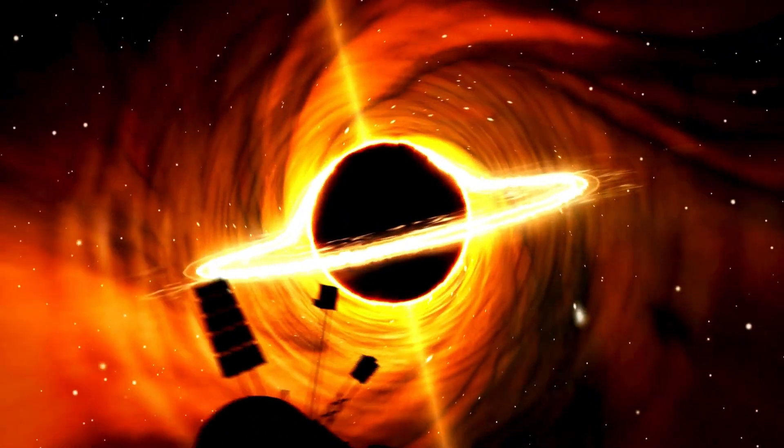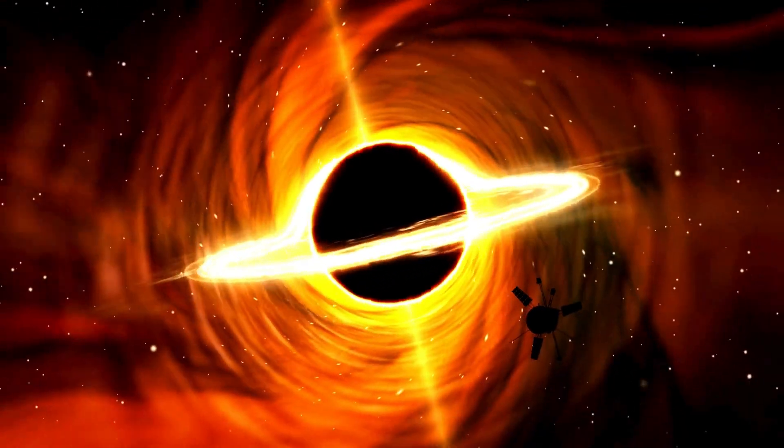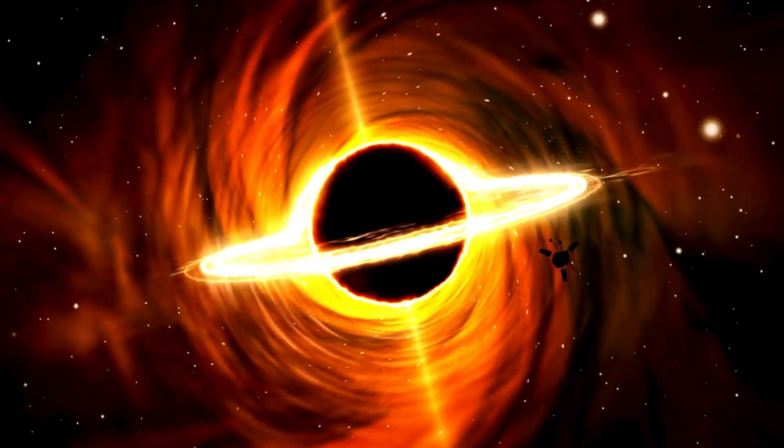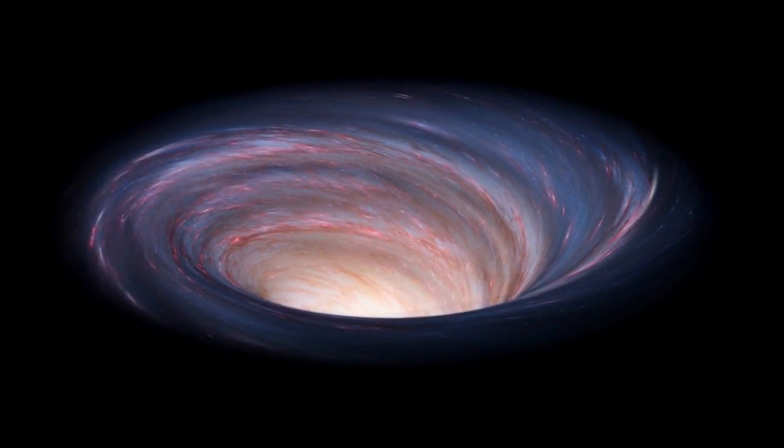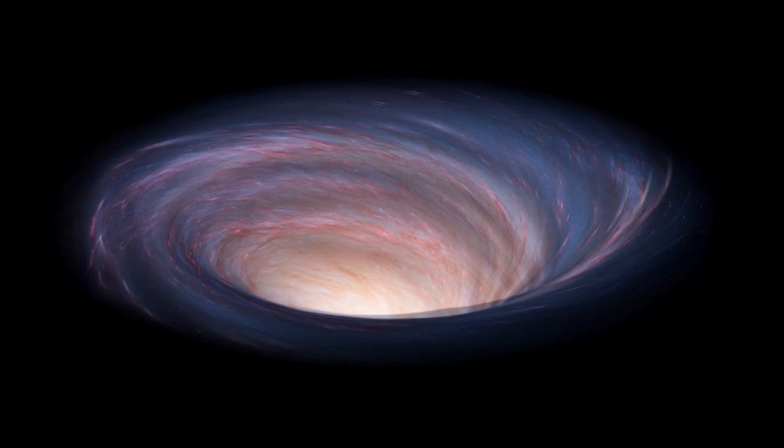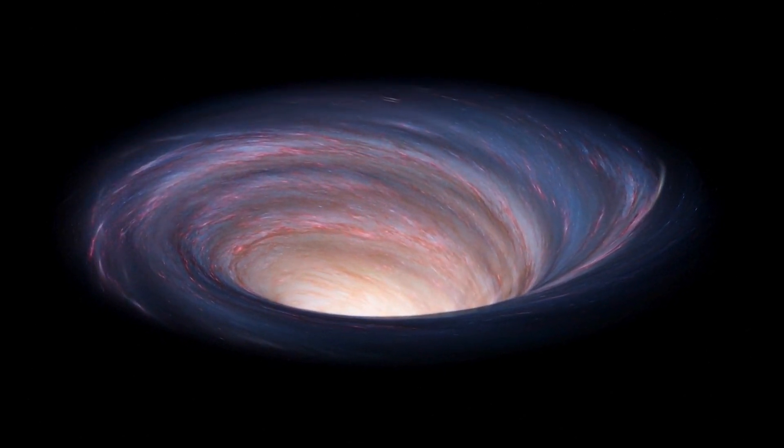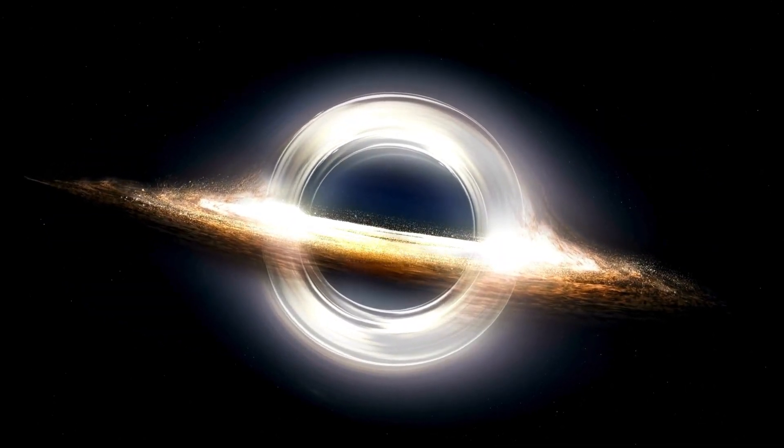As these mighty stars collapse, something strange occurs near their surfaces: time itself starts to play tricks. From the perspective of someone far away, time appears to slow down near the event horizon, the point of no return for anything falling into a black hole. It's like the star's clock ticks at a different pace compared to ours.